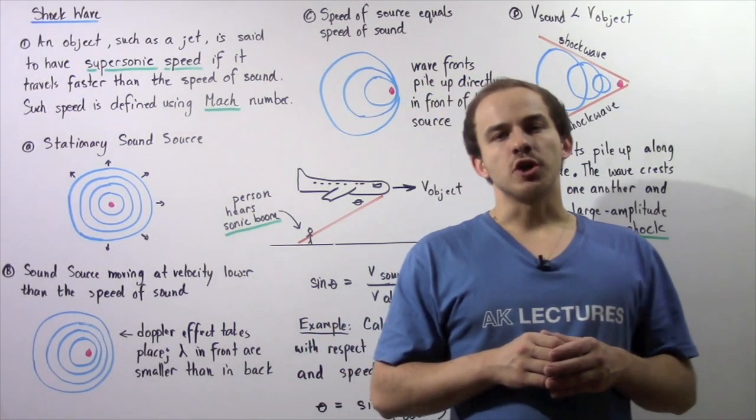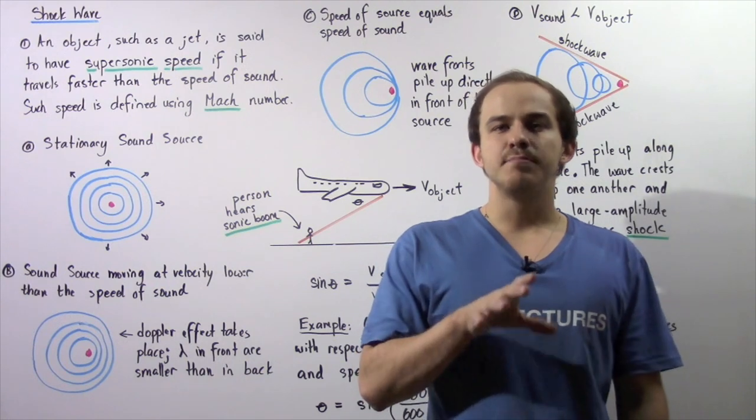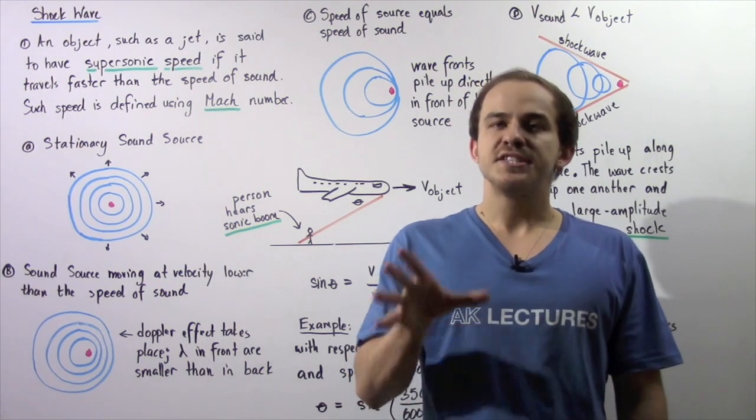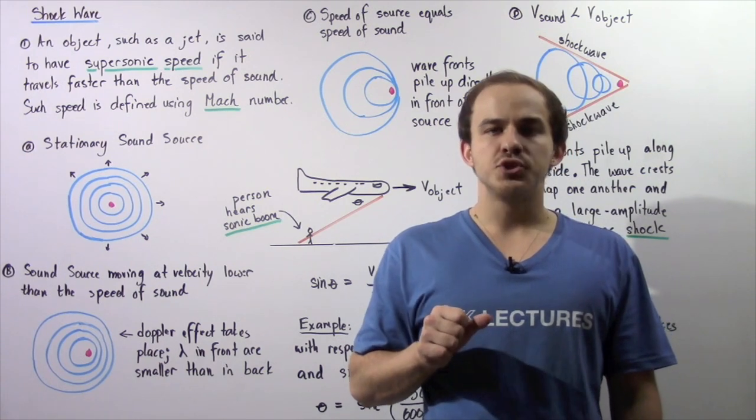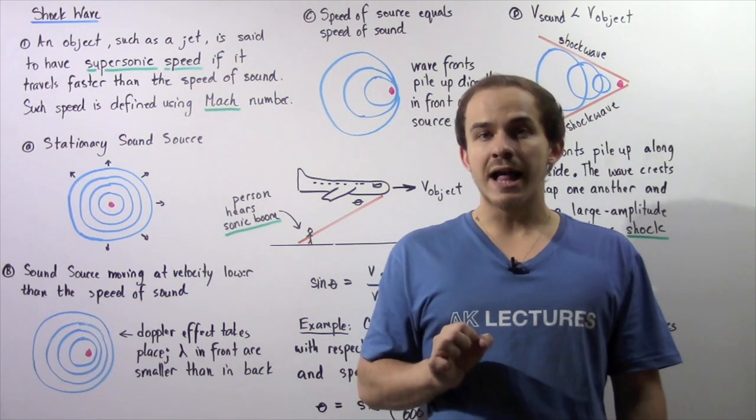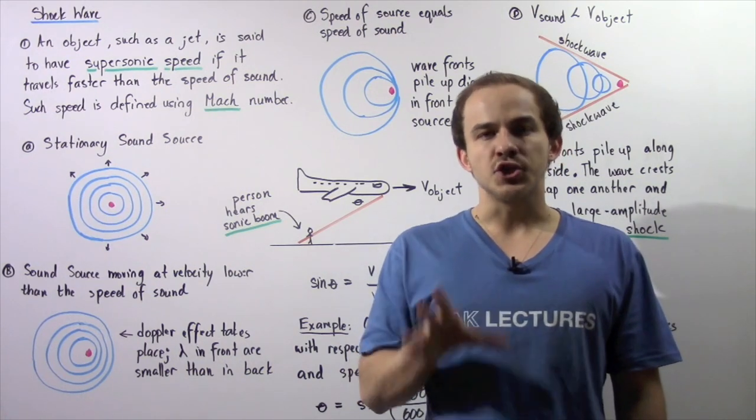Suppose that a stationary observer is standing and listening to the sound that is created by a certain moving object. If the speed of that moving object creating the sound wave is less than the speed of the sound itself, that means the Doppler effect will be observed.